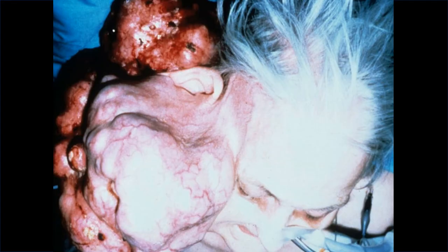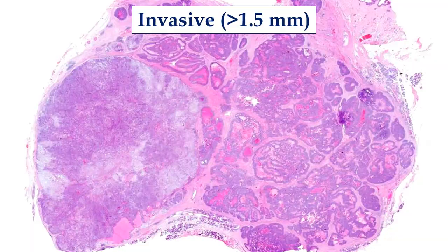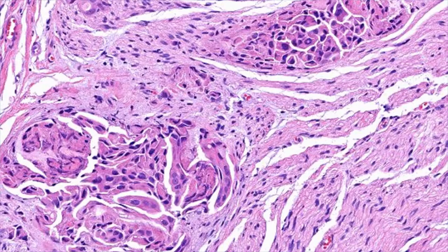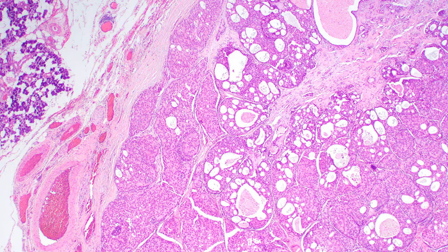These can be very large tumors — residents must submit at least one section per centimeter. They are unencapsulated, poorly circumscribed, widely infiltrative, with lots of comedonecrosis, marked desmoplasia, and concurrent pleomorphic adenoma seen in about 80 percent of cases. Roman bridging and marked pleomorphism of apocrine-type cells with prominent nucleoli are characteristic. Perineural and intraneural invasion are usually easily identified, with heavy stromal sclerosis and areas of comedonecrosis.